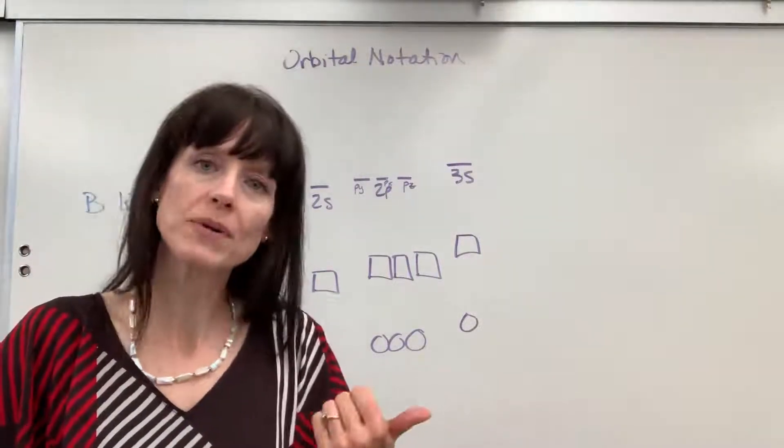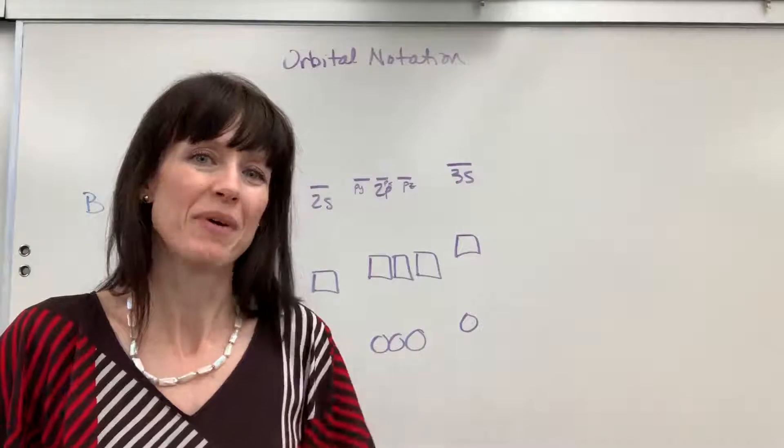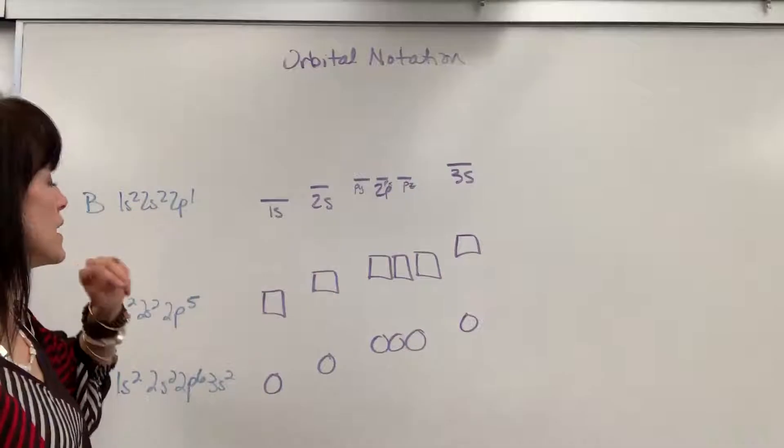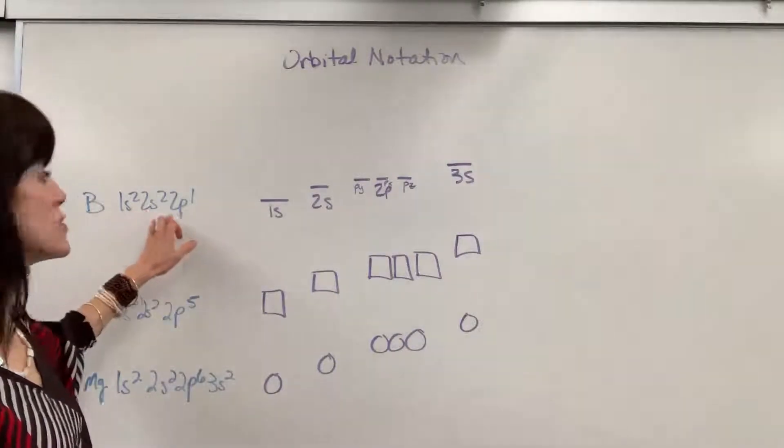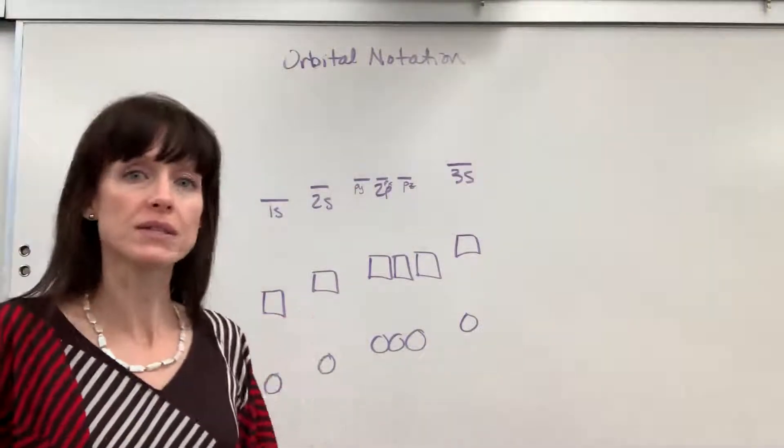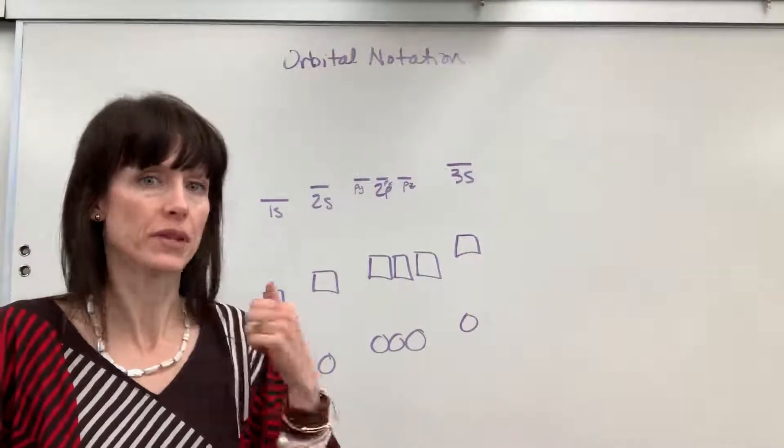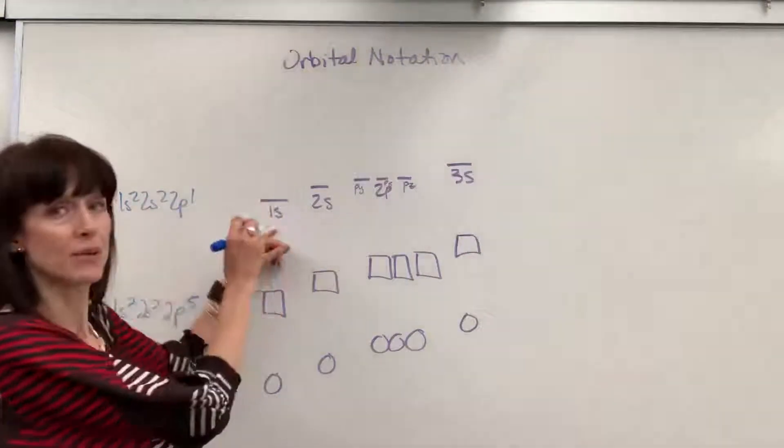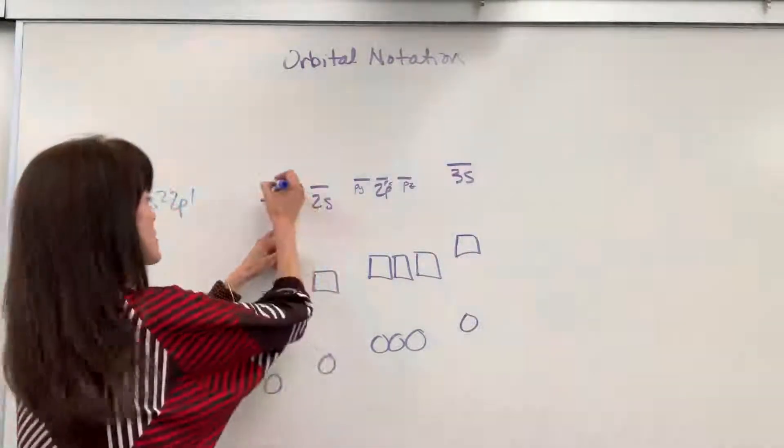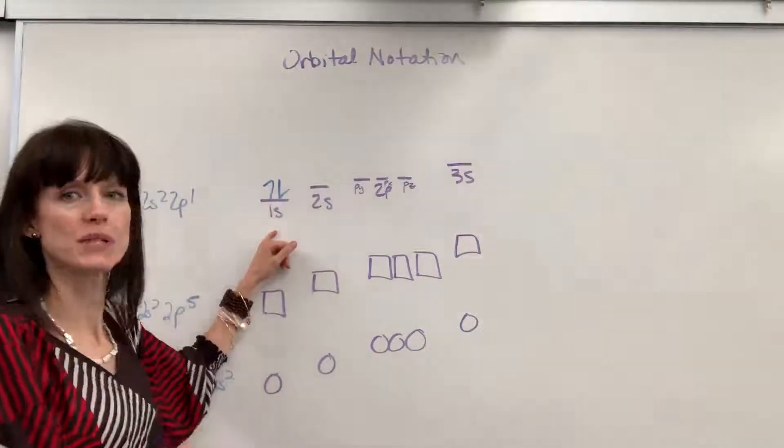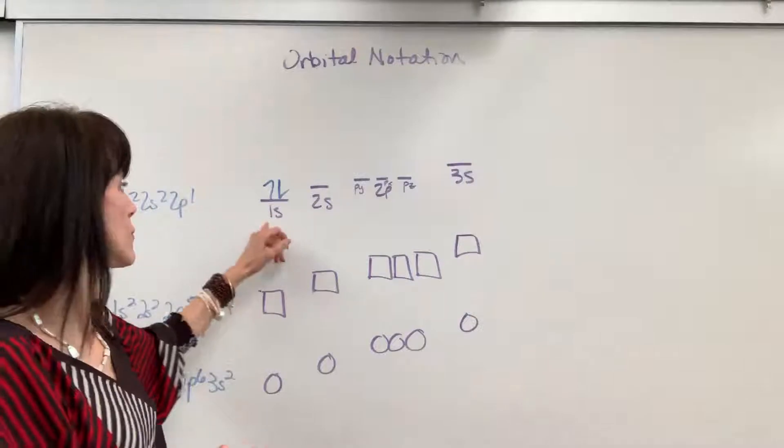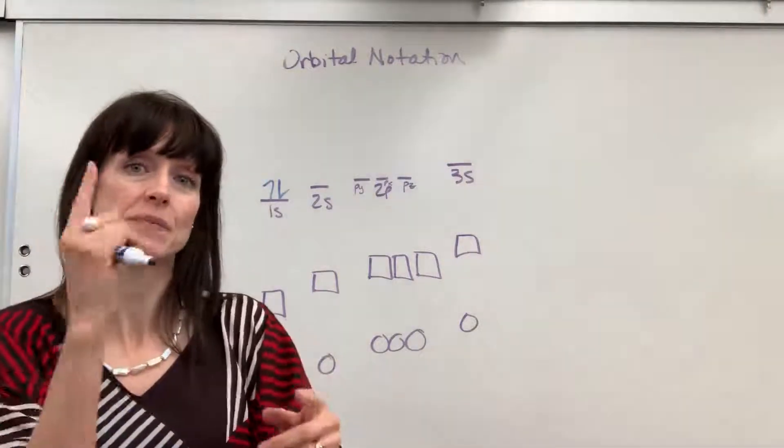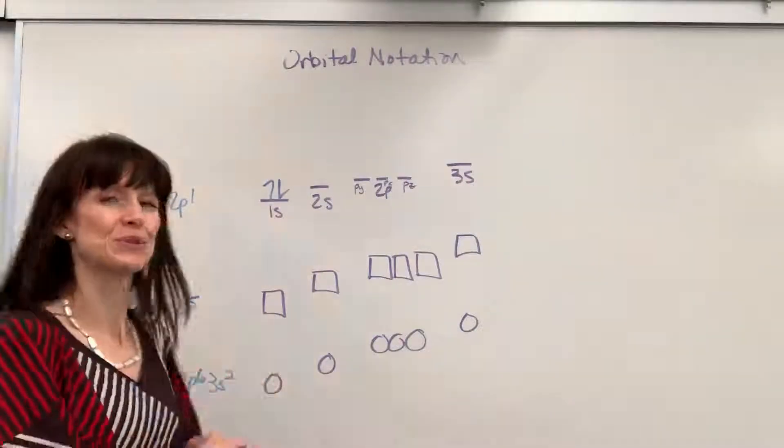We're going to use the Aufbau principle, Hund's rule, and the Pauli exclusion principle. So I'm going to do boron. Here we have five electrons, 1s2, 2s2, and 2p1. We always start at the lowest energy level. There's your Aufbau principle. So energy level 1, we've got two electrons and I use the Pauli exclusion principle. An electron spins up and an electron spins down. We use arrows and we put them pointing up, pointing down to indicate spins. An up spin and a down spin. Pauli exclusion principle.